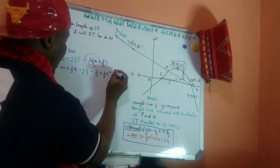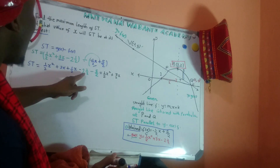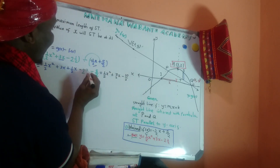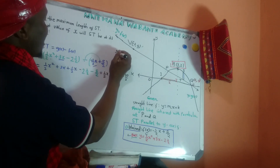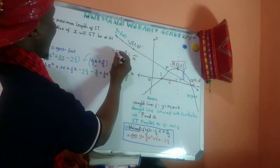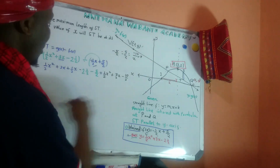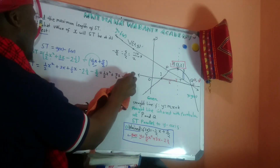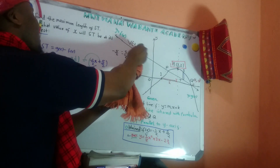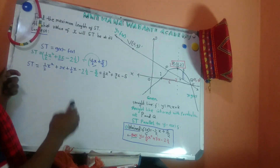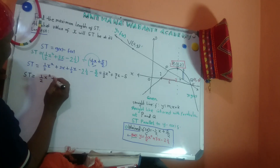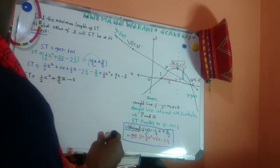Combining terms: 3x plus a half x gives 7 over 2 x. Then negative 2 and a half minus negative 5 over 2: that's negative 5 over 2 minus negative 5 over 2, which equals negative 10 over 2, which is negative 5. So HT equals a half x squared plus 7 over 2 x minus 5. But that's not the final equation yet - they say find ST and where the maximum length occurs.